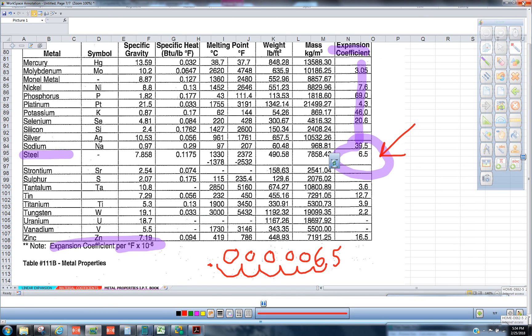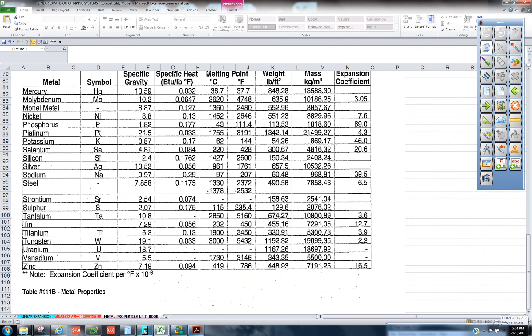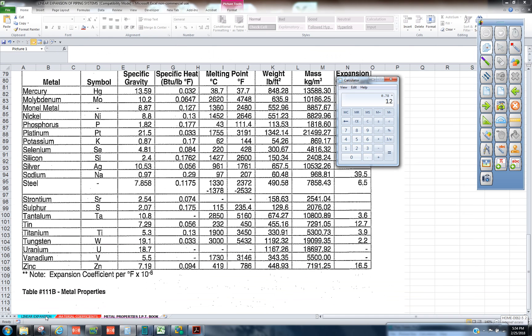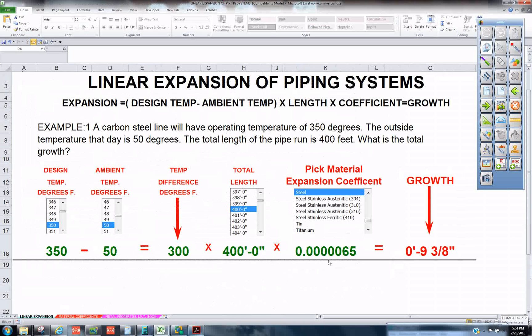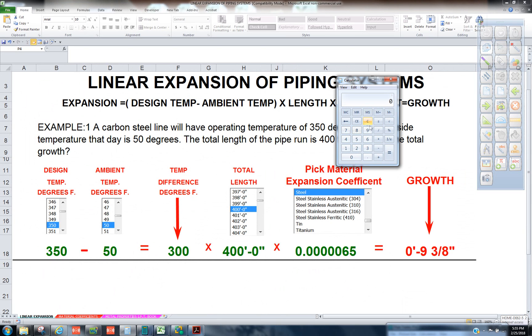So when we get our calculator and we apply the formula, we take the temperature difference of 300, times it by 400 feet, and then times it by 0.0000065.